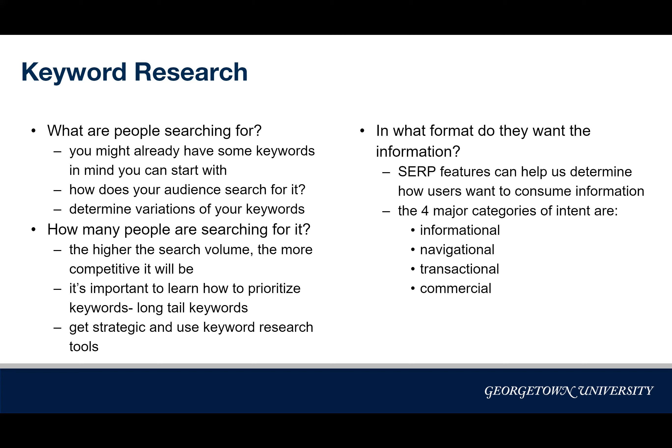Once you've developed your list of keywords, the next question is: how many people are searching for each keyword or phrase? Then you want to prioritize which keywords to focus on. Typically the higher the search volume, the more competitive the keyword will be. We recommend staying away from higher search volume words because of high competition, but also because the search intent for those keywords can be vague. For example, the keyword 'pizza' will likely have a really high search volume, but the intent is unclear — is the user looking for pizza recipes, a pizza delivery place, or nutritional information? For this reason, we suggest prioritizing long-tail keywords.